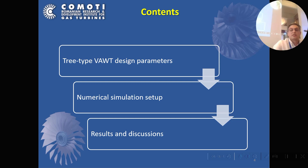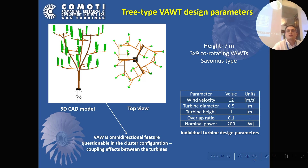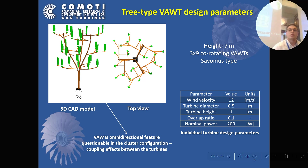I will show some numerical results for this kind of turbine and explain the results and our future work. Our prototype looks like a tree that accommodates 27 co-rotating Savonius-type vertical axis wind turbines. They are grouped on three levels, and the overall height of the tree is 7 meters. The parameters for each individual turbine are reported in the table: designed for a nominal power of 200 watts, turbine height of 1 meter, turbine diameter of 0.5 meters, and an overlap ratio of 0.1.